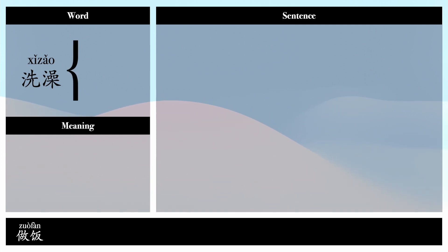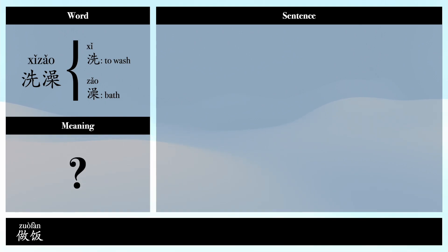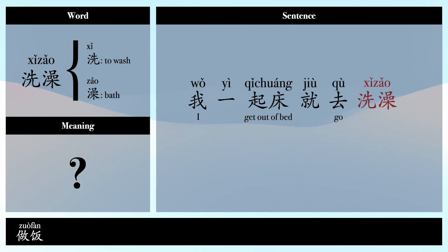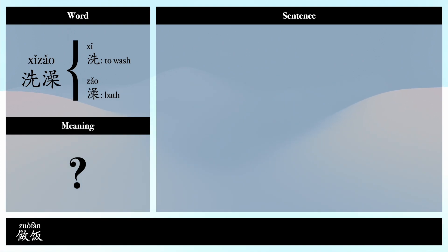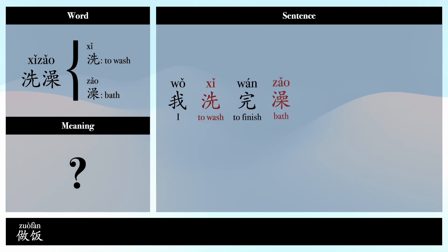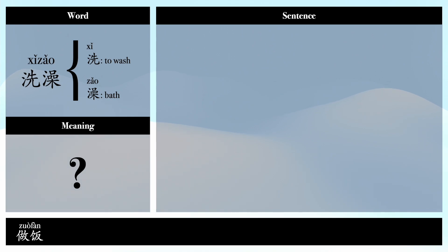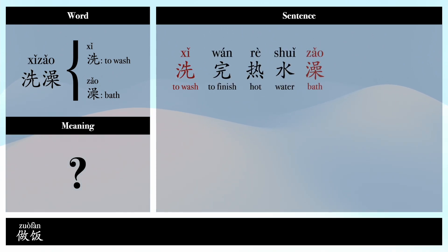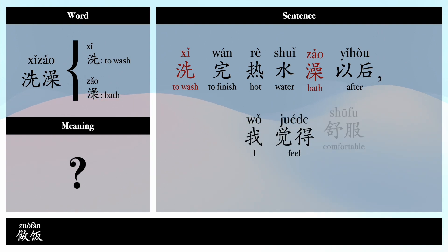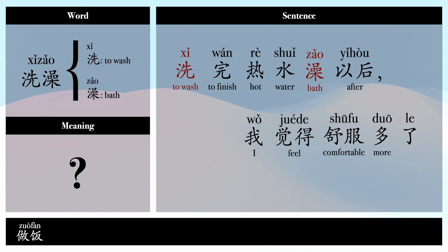洗澡 — 洗: to wash, 澡: bath. Example sentences: 我一起床就去洗澡。(As soon as I get up, I go take a bath.) 我洗完澡以后吃早饭。(After I finish bathing, I eat breakfast.) 洗完热水澡以后我觉得舒服多了。(After taking a hot bath, I feel much more comfortable.)